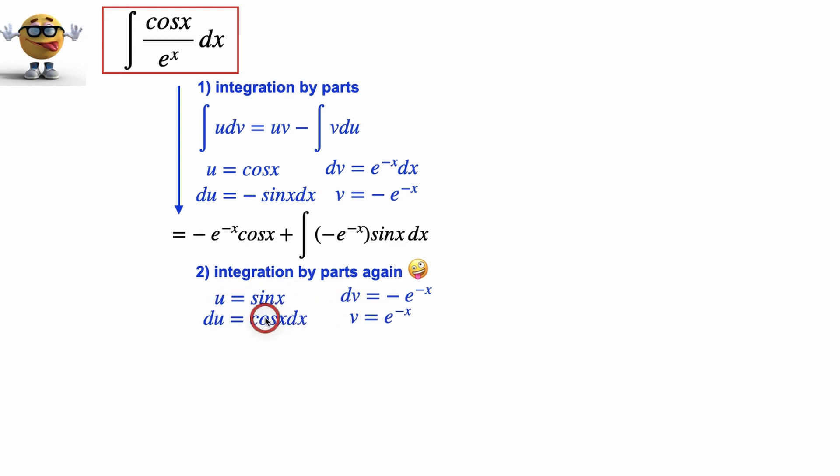Now we'll take these and plug them into our integration by parts formula for this term. We get this right here. So this is the integral we're trying to evaluate, equals this term comes along for the ride. This is the u times v for this part right here, minus the integral of v, which is right here, du, and du is cos x.